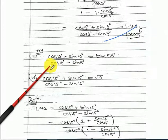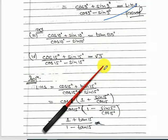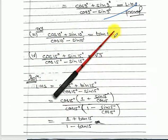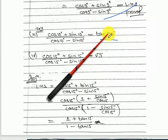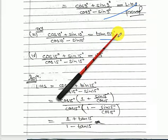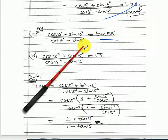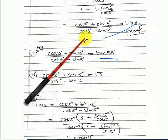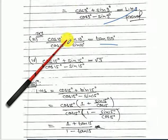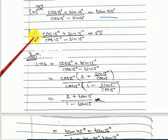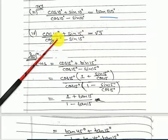There is a similar problem with tan 55; you can write 45 plus 10 and proceed the same way. Try it yourself.